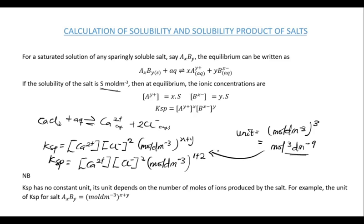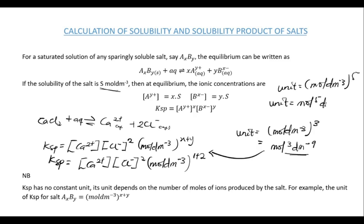Note that KSP has no fixed unit; its units depend on the number of moles of ions produced by the salt. For a salt AxBy, the unit of KSP is mol per dm³ raised to the power x plus y. For example, if the sum of the powers is 5, the unit would be mol⁵ dm⁻¹⁵. So the unit of KSP changes depending on the moles of atoms present at equilibrium.